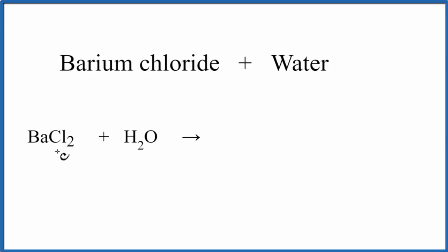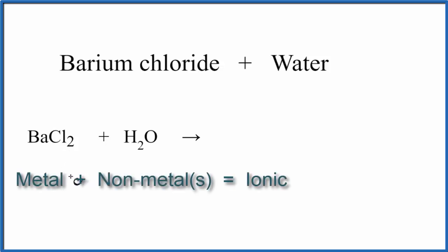Barium is a metal, and chlorine, that's a non-metal. When we have a metal and a non-metal together, that's called an ionic compound, and we need to take into account the ions.